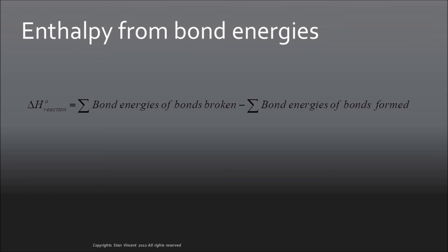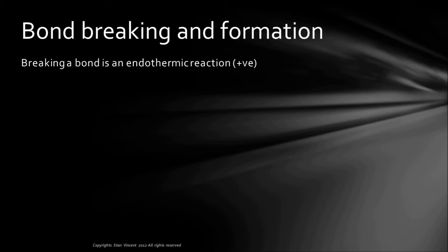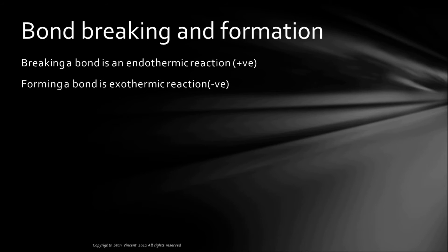The simplest way to determine enthalpy change from bond energies uses this equation: ΔH° reaction equals the sum of bond energies of bonds broken minus the sum of bond energies of bonds formed, where all values are assigned positive signs. Breaking a bond is an endothermic reaction, therefore ΔH or Q is positive. Forming a bond is an exothermic reaction, therefore Q or ΔH is negative.